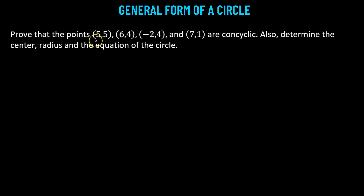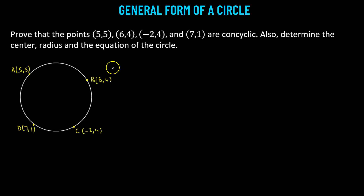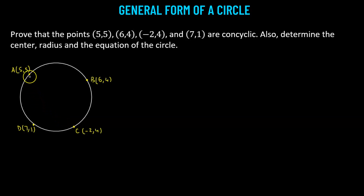In this problem we need to prove that four points are concyclic, meaning they must lie on a circle. We also need to determine the center, radius, and equation of the circle. We have a circle and we're assuming that all four points are concyclic, naming them A, B, C, and D.